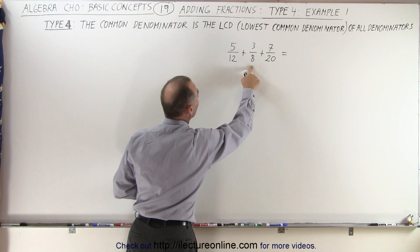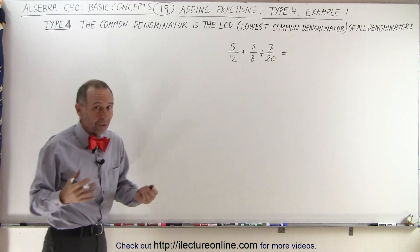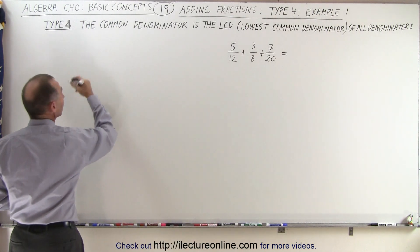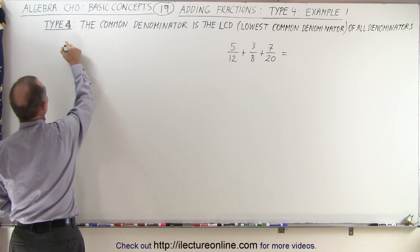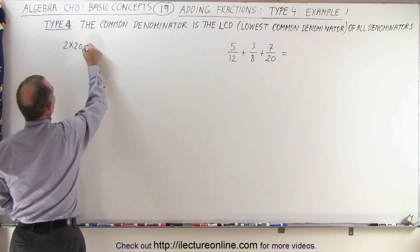Obviously 12 and 8 do not evenly fit into 20, so that's not the lowest common denominator. So how about the next one would be 40, so 2 times 20, that's equal to 40.